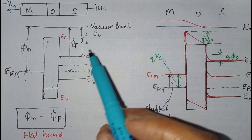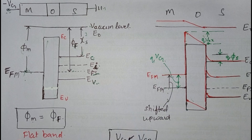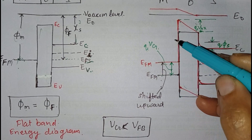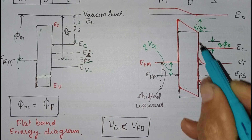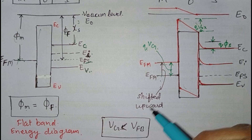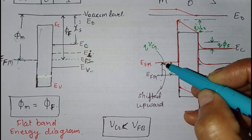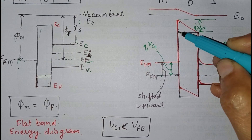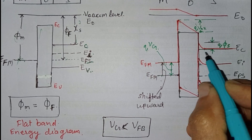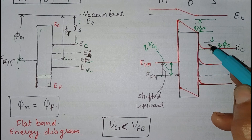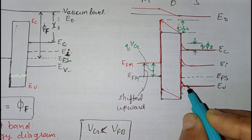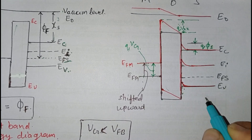Using the flat band diagram, we derive the accumulation mode energy diagram. When we apply a more negative voltage, the energy band diagram of the metal side is shifted upward. The black lines show the flat band diagram and the red lines show the energy band diagram in accumulation mode. The metal side Fermi level is shifted upward by q times Vg. Band bending occurs at the interface due to accumulation of positive charges near the silicon–silicon dioxide interface.